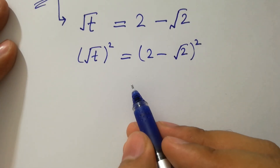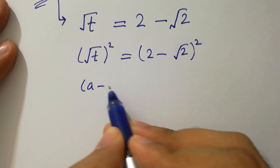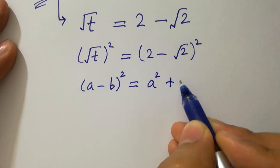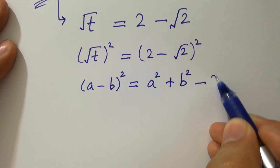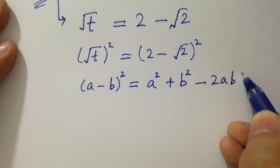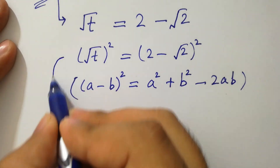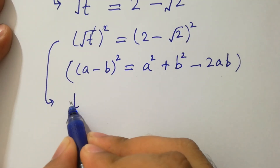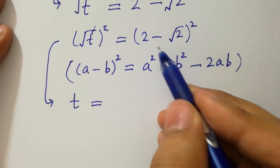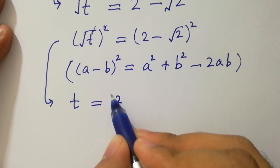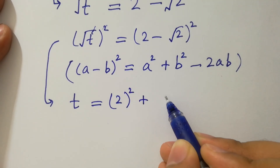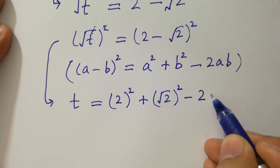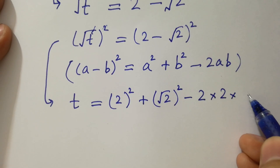By this, we know the formula of (a minus b) whole squared, which is equal to a squared plus b squared minus 2ab. Apply now. We have here: the squared cancels from squared, and we have t equal to the (a minus b) whole squared formula — 2 squared plus square root of 2 squared minus 2 times 2 times square root of 2.